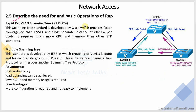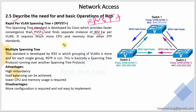Then there is Rapid Per-VLAN Spanning Tree Plus (RPVST+). This spanning tree standard is developed by Cisco — a Cisco proprietary protocol — which provides fast convergence compared to PVST+. RPVST+ is better because of fast convergence, and finds a separate instance of 802.1w per VLAN. The IEEE 802.1w standard is what RPVST+ is based on, electing a root bridge per VLAN. It requires more CPU and memory than STP standard — more CPU and memory are needed than common spanning tree protocols.